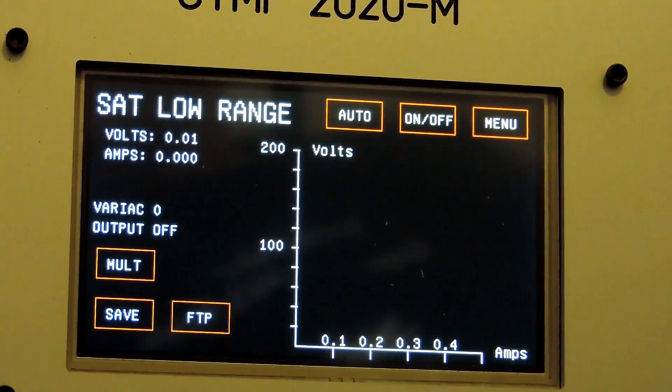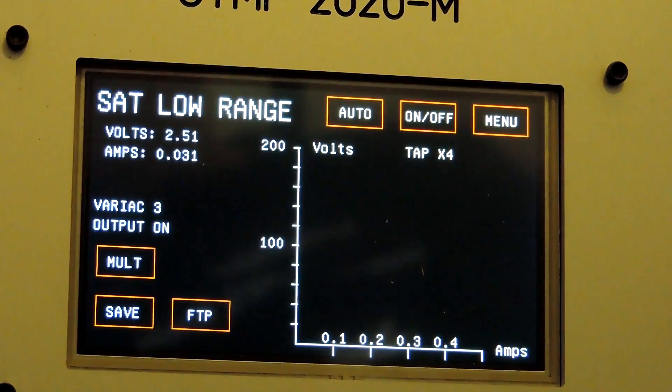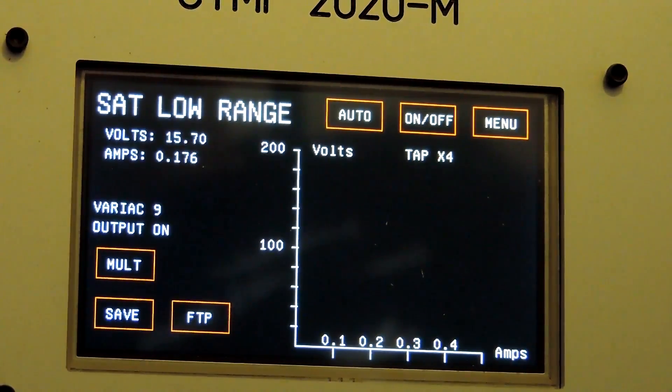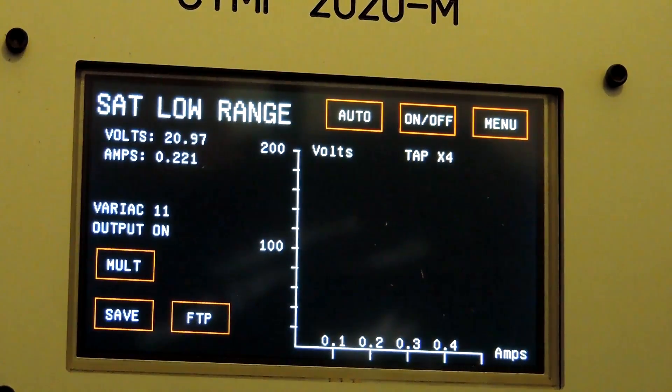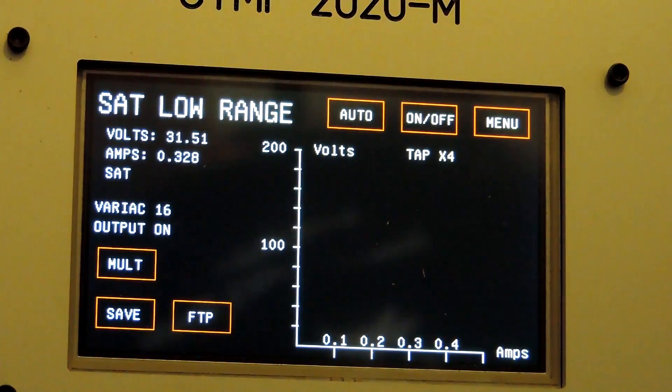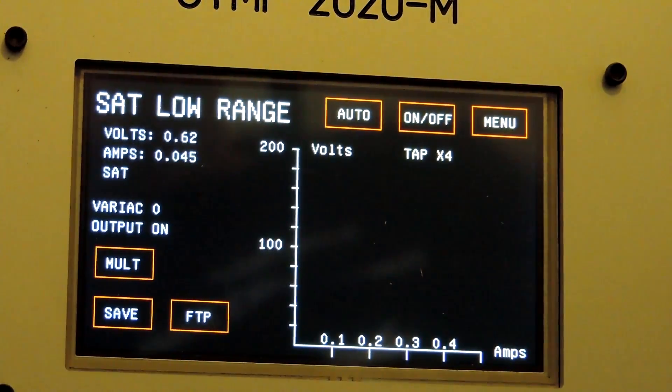Okay, erasing that and now it will proceed to test tap X4. X4 saturates really quick, it's 200 to 5, so you don't get a very good characteristic out of it.